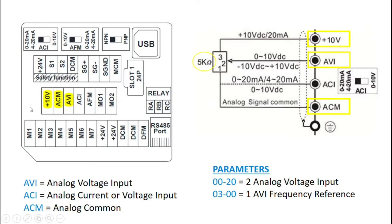So pretty much everything you need to know right here: your plus 10 volt terminals, your analog common terminal, and your AVI, so your analog voltage input terminal here. This is the MS300 control board.